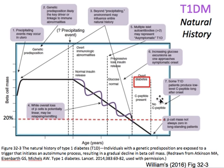Diabetes may only be discovered when screening in young patients or when the patient develops DKA, because type 1 DM patients are very prone to ketoacidosis due to insulin deficiency.